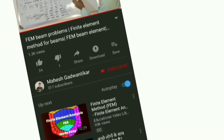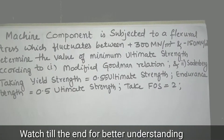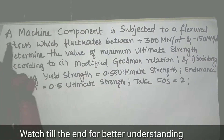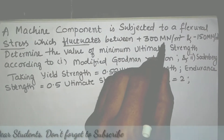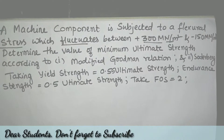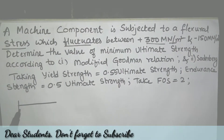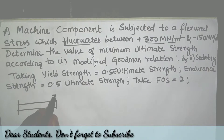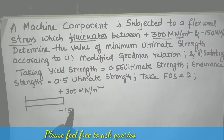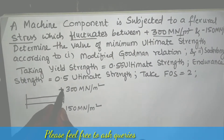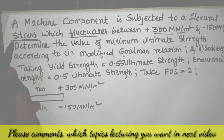Press the bell icon on the YouTube app and never miss another update. I am going to solve a problem based on fluctuating stress. A machine component is subjected to flexural stress which fluctuates between 300 MPa to minus 150 MPa. This means there is a machine component — let us take it as a bar — with stress fluctuating from 300 MPa to minus 150 MPa. This is the maximum stress and this is the minimum stress.